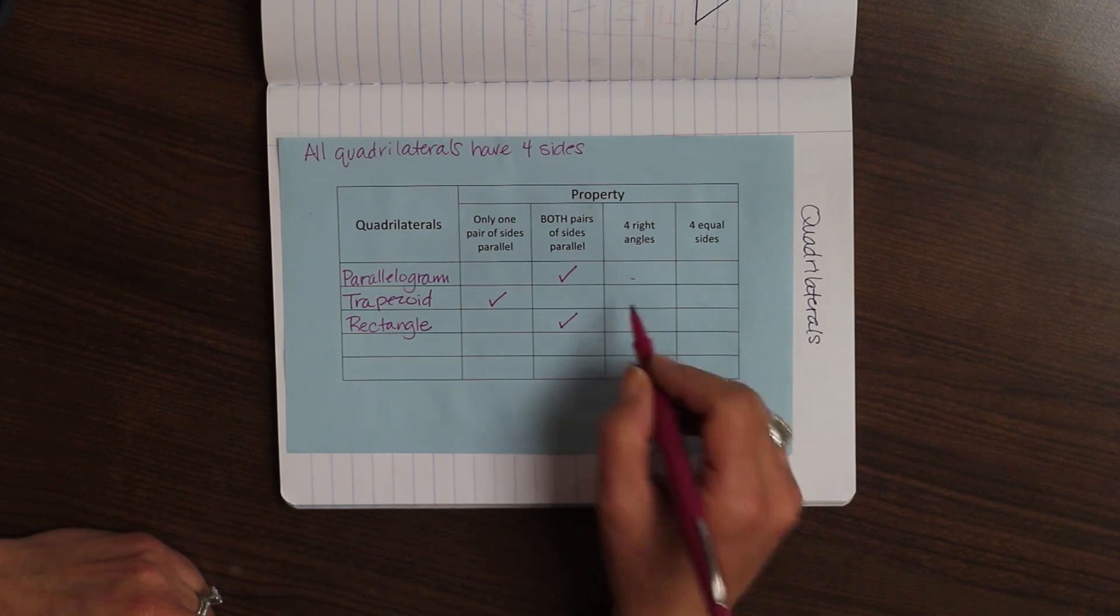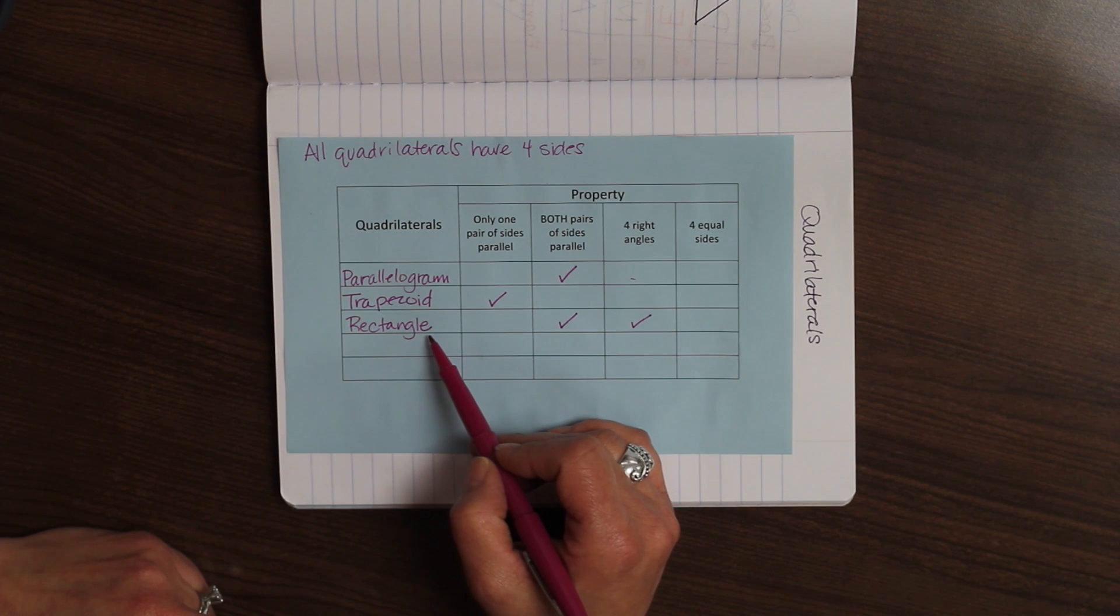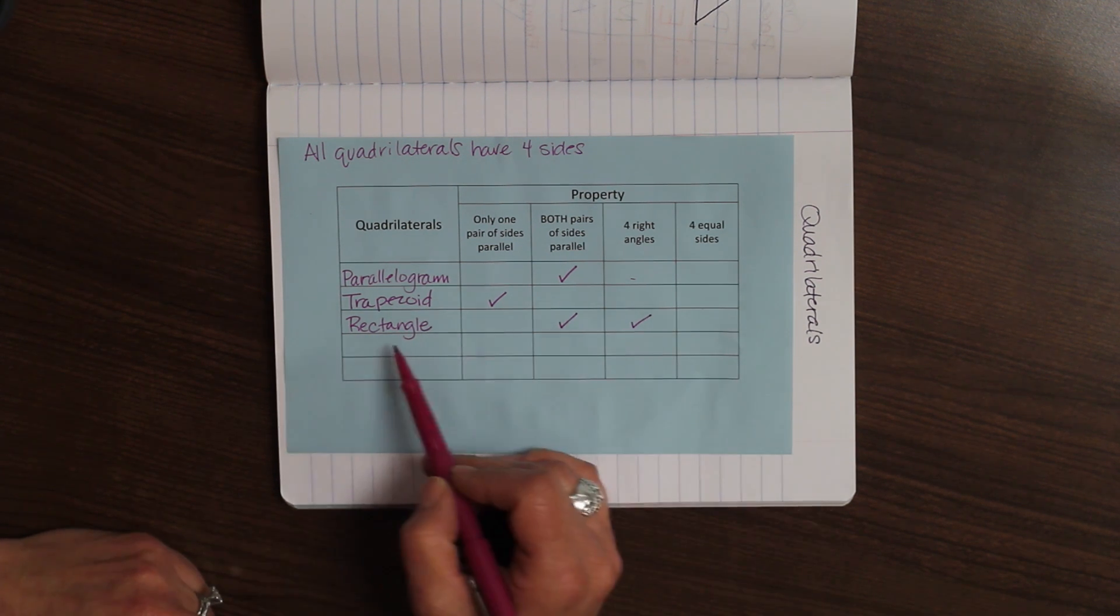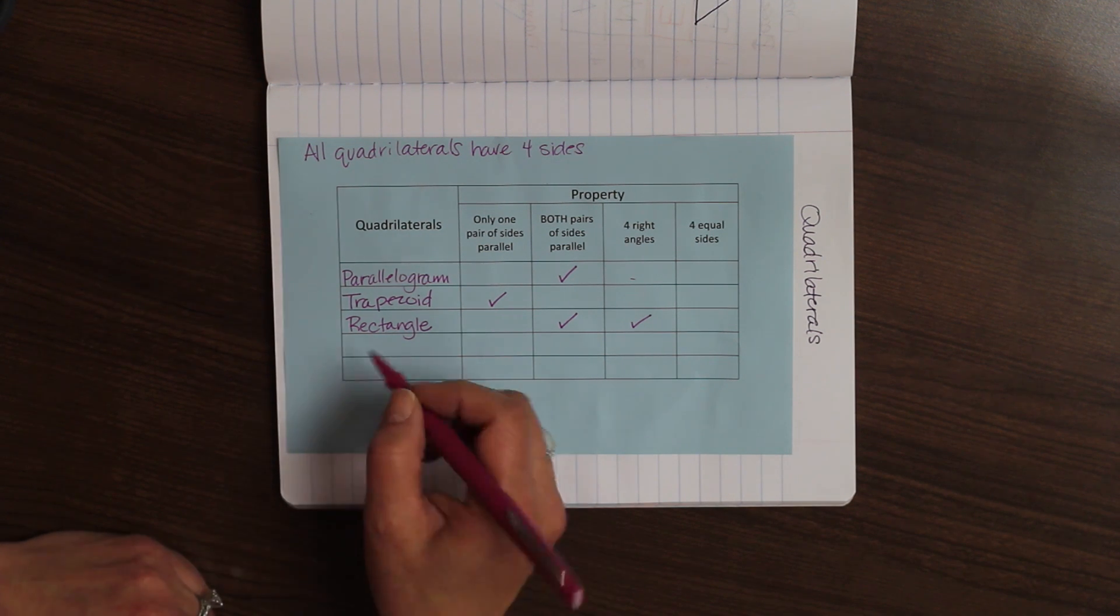Do they have four right angles? Yes. And four equal sides? No. A rectangle doesn't have four equal sides. They can be different. That's what categorizes them as a rectangle.